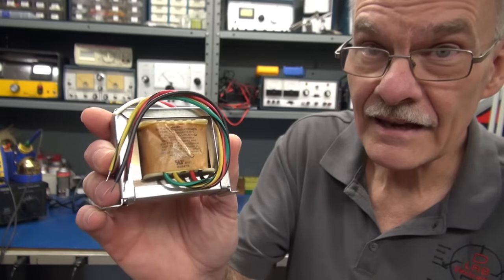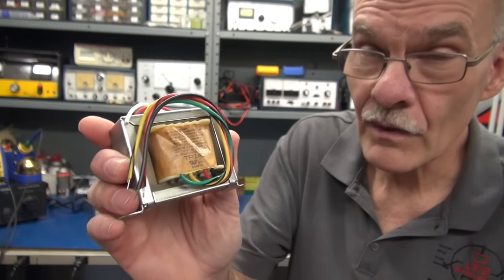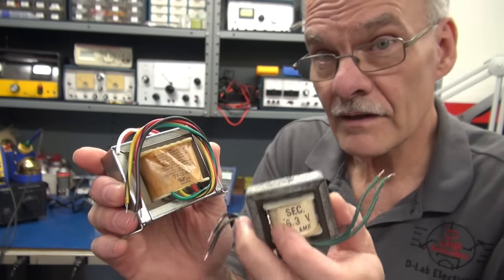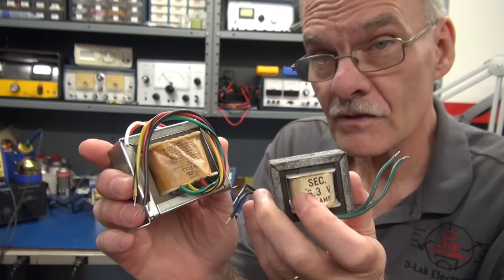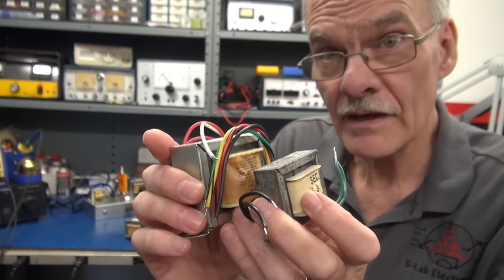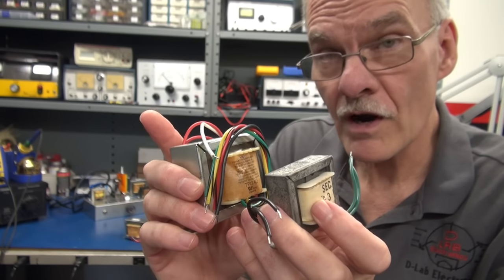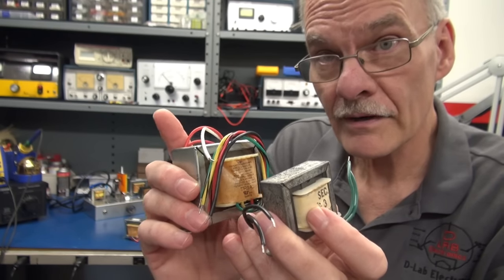So the N68X averages around $22. And then let's say you got another 10 bucks for your filament transformer. Put these two together, and you have your power requirements for a small practice amp.